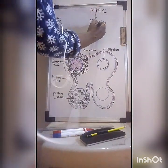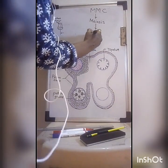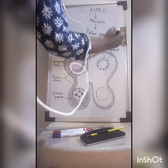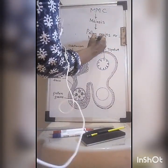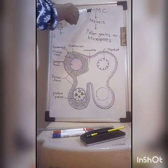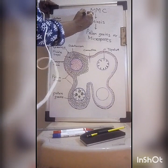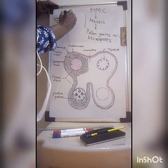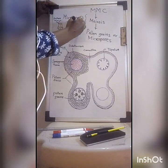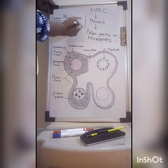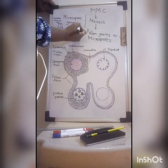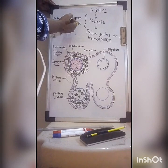After meiosis, the microspore mother cells form pollen grains. Another name for pollen grains is microspores. The process by which microspore mother cells produce pollen grains is called microsporogenesis. If we split this word: microspore means pollen grain and genesis means formation — so the formation of pollen grains is called microsporogenesis.